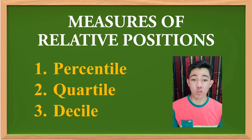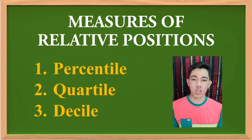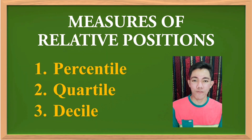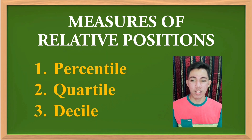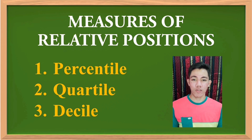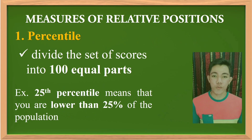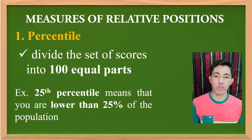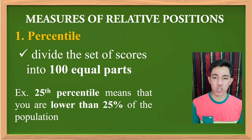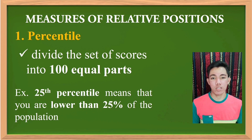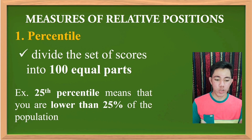Hello students, welcome back to my YouTube channel. For today's video I'm going to discuss the parts of the measures of relative position: the percentile, the quartile, and the decile. So without further ado, let's get started. First, we will define what a percentile is. When we say percentile, you divide it by 100 — that is what we call the percentile.